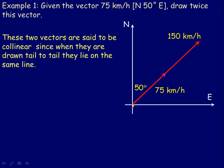These two vectors are an example of vectors that are said to be collinear. Collinear means that if they're placed tail to tail, then they lie in the same straight line. So that's an example of collinear vectors.